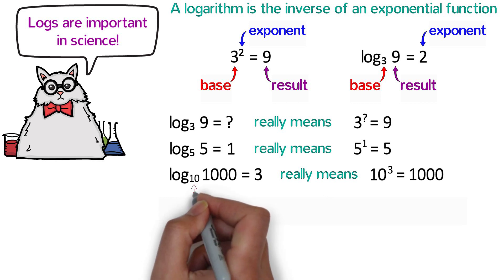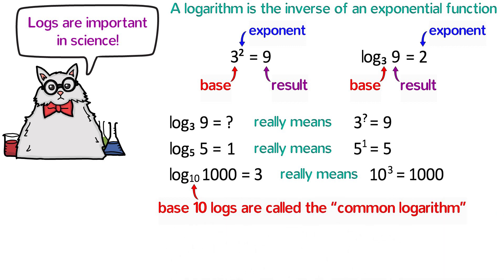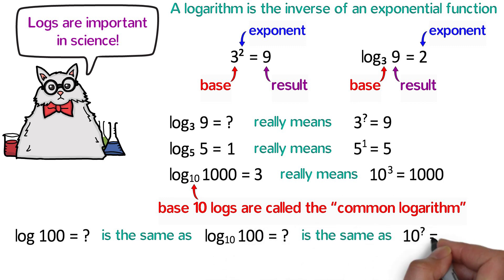It turns out that base 10 logs are so common and important that we call base 10 logs the common logarithm. So if a question simply asks you for the log of 100, that is the same as the log base 10 of 100, which is also the same as asking 10 to what power is 100?